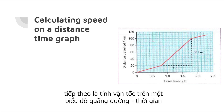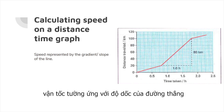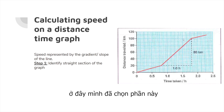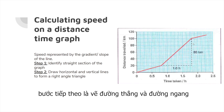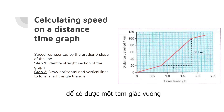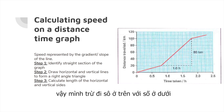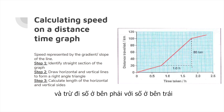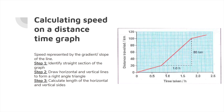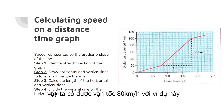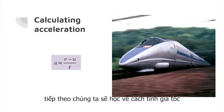Speed on a distance-time graph is represented by the gradient (slope) of the line. Step one: identify a straight section of the graph. Step two: draw horizontal and vertical lines to form a right-angle triangle. Step three: calculate the lengths of the horizontal and vertical sides. Dividing the vertical side (80 km) by the horizontal side (1 hour) gives a speed of 80 kilometers per hour.